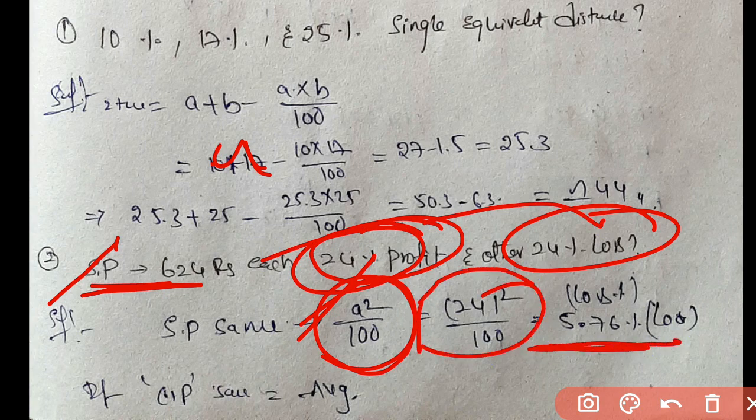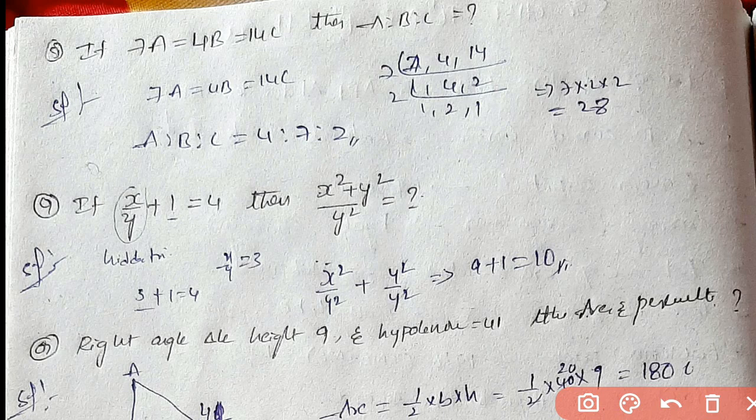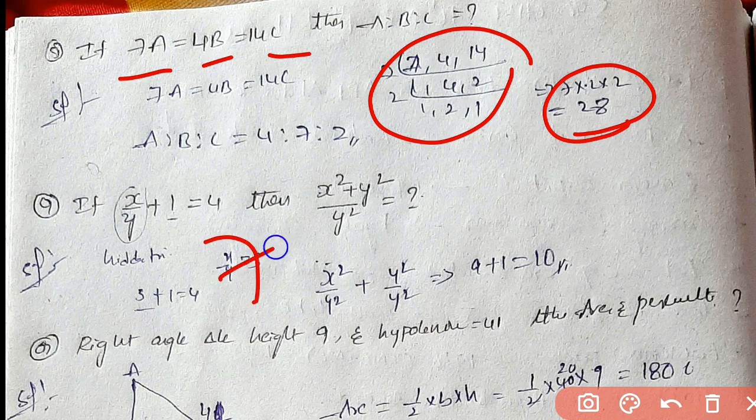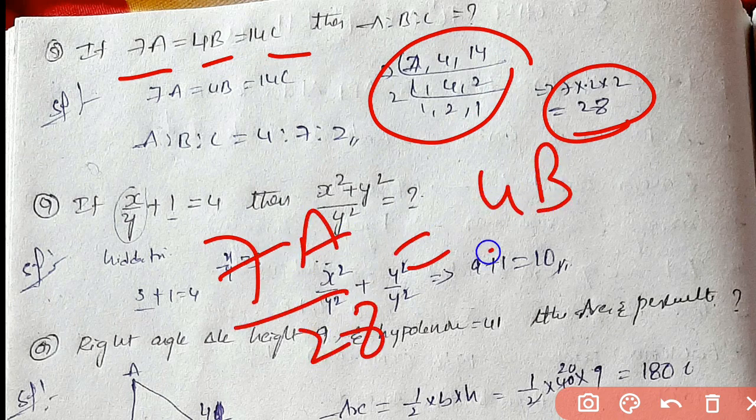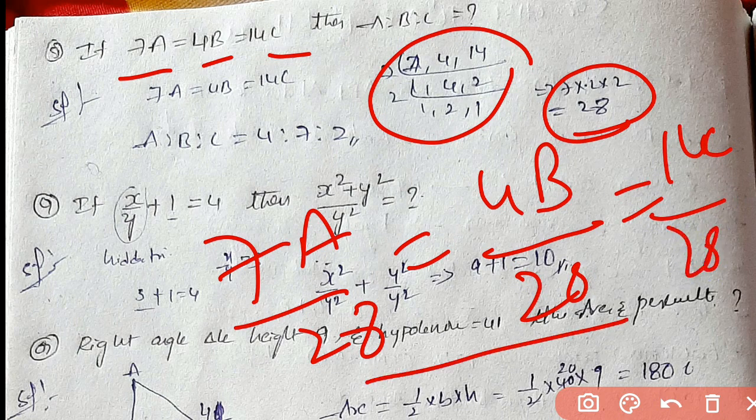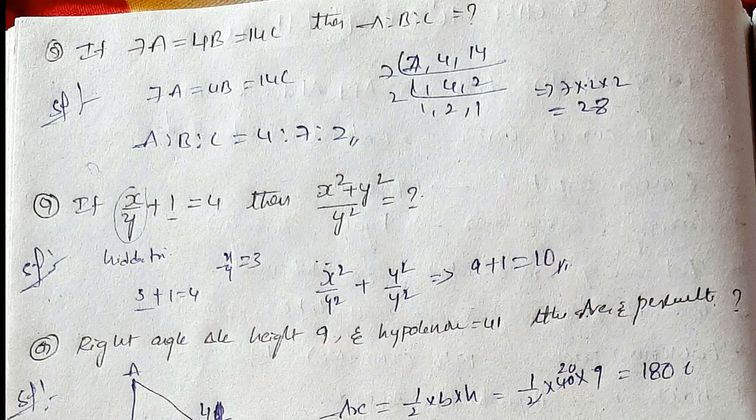If 7a equals 4b equals 14c, then find a is to b is to c. LCM of 7, 4, 14 is 28. So 7a/28 equals 4b/28 equals 14c/28. Simplifying, we get 4 is to 7 is to 2.